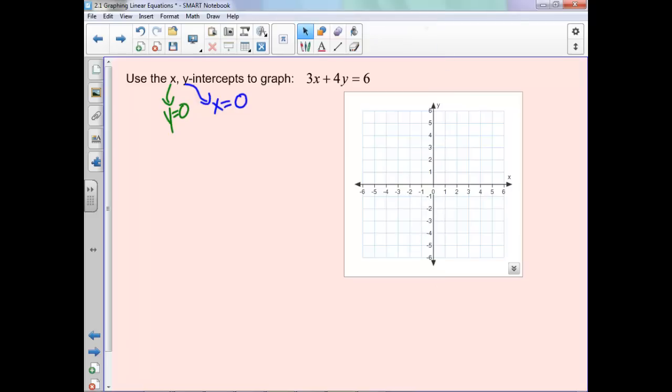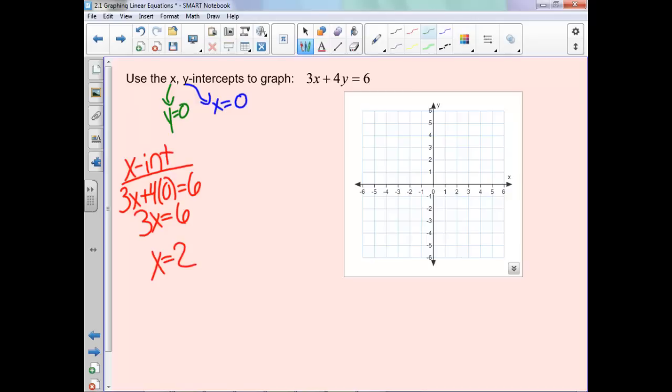Let's start by finding our x-intercept. Our y is 0, so we just substitute in 0 for y and solve. So 3x equals 6, because 4 times 0 is 0. Divide by 3, x equals 2. This means it crosses the x-axis at positive 2.